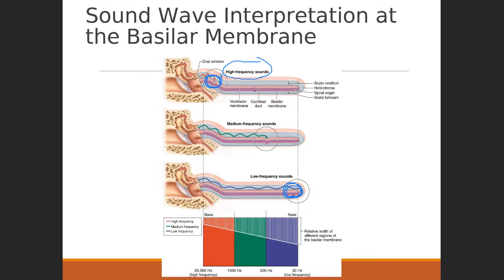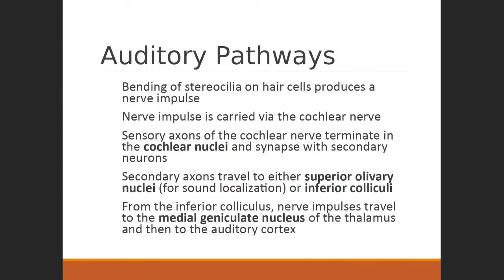The bending of those stereocilia as part of the tectorial membrane makes its way through the superior olivary nuclei for sound localization and the inferior colliculus for hearing reflexes, before reaching the primary auditory cortex. It goes through a part of the thalamus called the medial geniculate body. Multiple synapses go from the receptor to where hearing is actually perceived — in the temporal lobe.